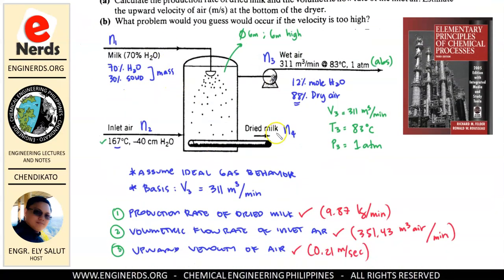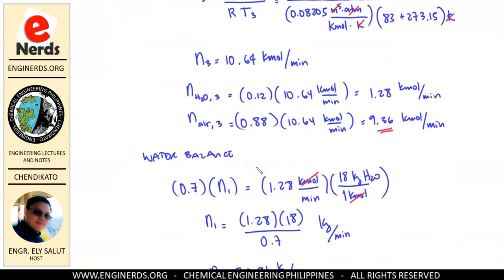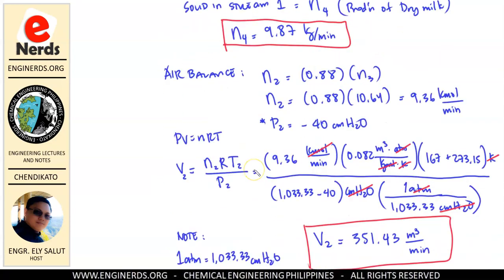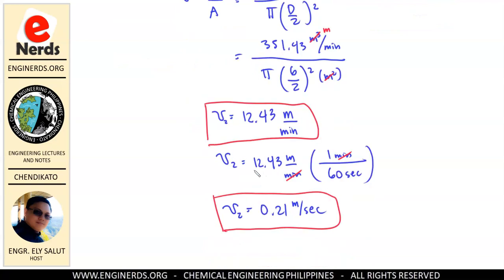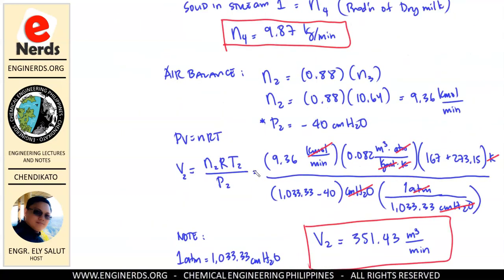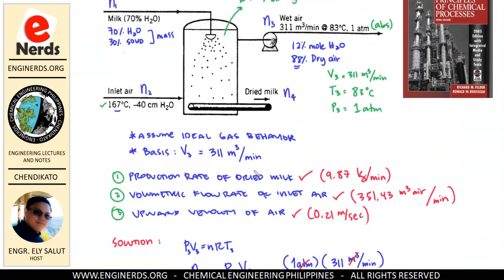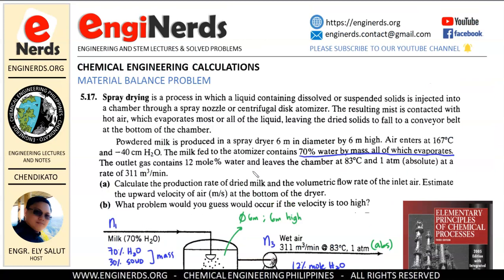This is the diagram of our problem and we will be calculating the solution. This involves the assumption of our given as behaving like an ideal gas. This is a really interesting sample problem and I hope this will help you in your study for material balance.